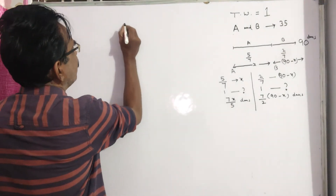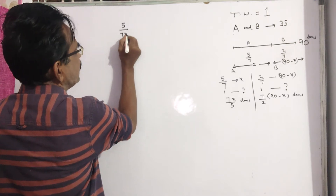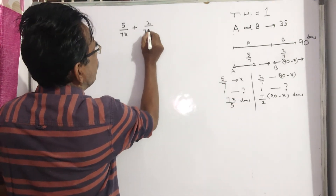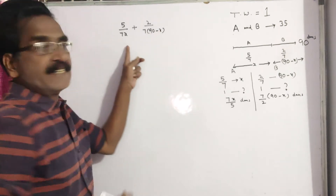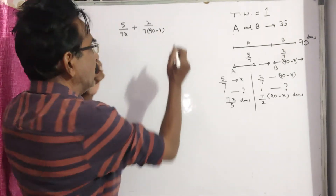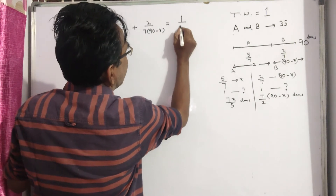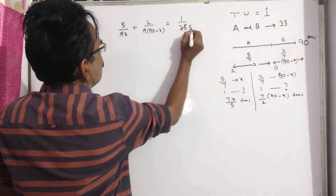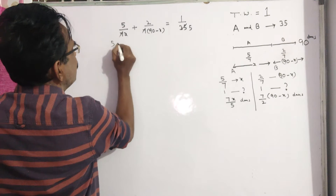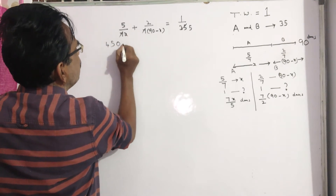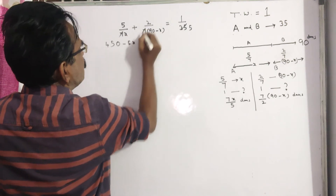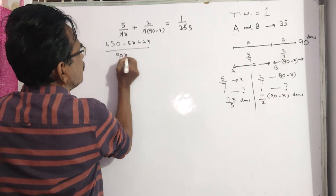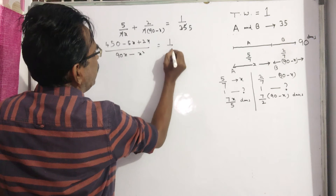Now, A's 1 day's work is 5/(7X), plus B's 1 day's work is 2/(7 into (90 minus X)). This sum equals A plus B's 1 day work, which is 1/35. Cross-multiplying gives: 5 into (90 minus X) plus 2X, all over X into (90 minus X), equals 1/35. That is, 450 minus 5X plus 2X over (90X minus X squared) equals 1/5.